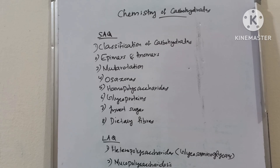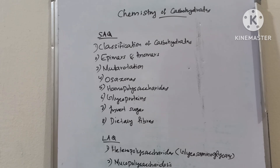In chemistry of carbohydrates, short answer questions: classification of carbohydrates, epimers and anomers, mutarotation, osazones, homopolysaccharides, glycoproteins, invert sugar and dietary fibers.